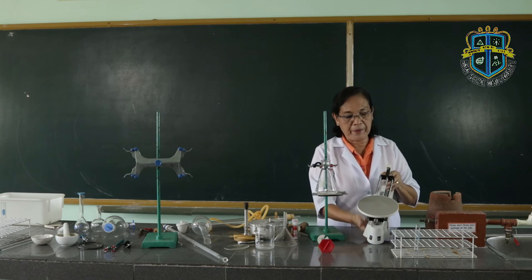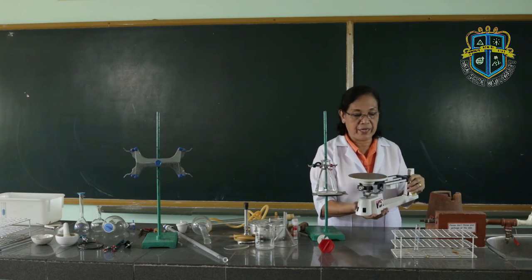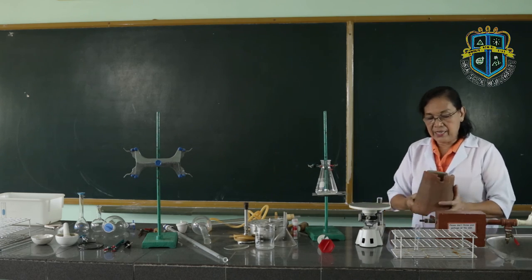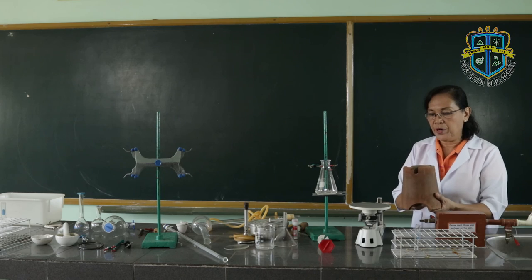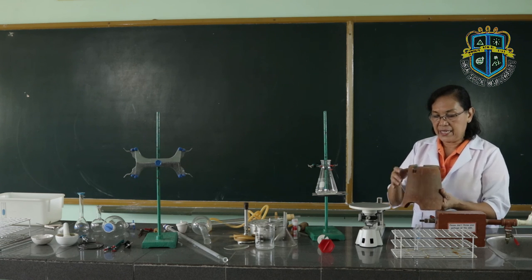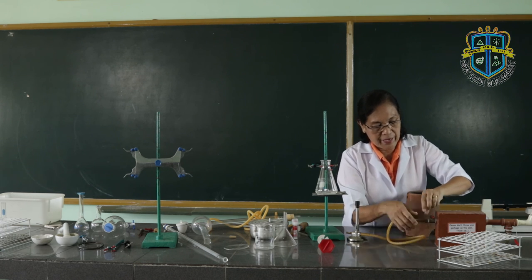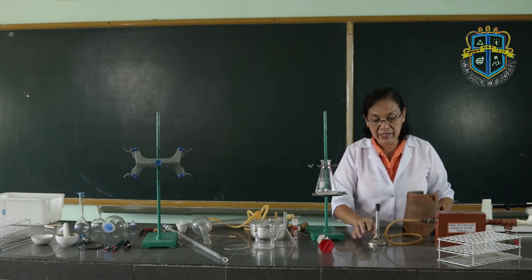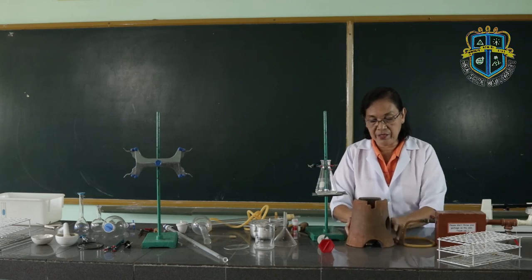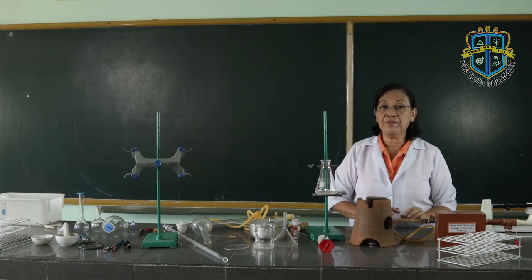This is the triple beam balance. The triple beam balance is used to measure or determine the mass of an object. And this is the clay shield. The clay shield is used to support vessels or containers when heating. When you are going to heat something using the Bunsen burner, connect the rubber tubing to the gas cup, then place the clay shield over the Bunsen burner to shield the flame from being blown off by the wind.